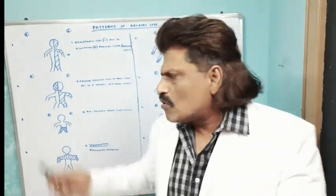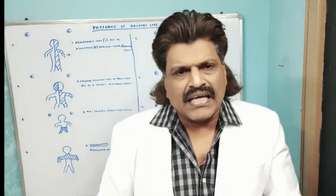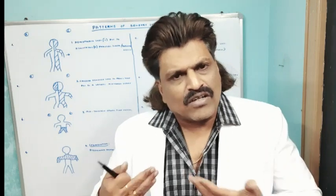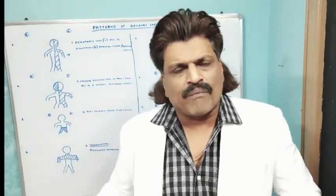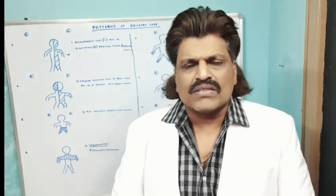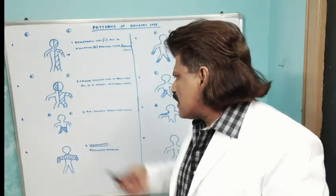The third pattern is a definite level on the thorax below which all sensations are lost — spinothalamic, posterior column, and autonomic. This clearly indicates a spinal cord lesion, because all sensations pass through a small cross-section of the spinal cord. When the spinal cord is affected at a particular level, all sensations below that level are lost.